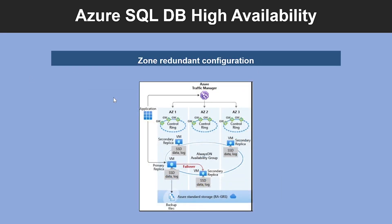The last topic is zone redundant configuration. By default, the cluster of nodes for the premium availability model is created in the same data center. With the introduction of Azure availability zones, SQL Database can place different replicas of the business critical database into different availability zones in the same region. To eliminate a single point of failure, the control ring is also duplicated across multiple zones as three gateway rings, and routing to a specific gateway ring is controlled by Azure Traffic Manager.